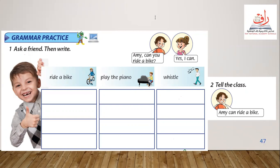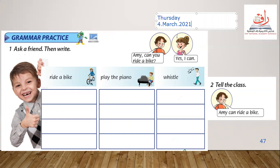Now we're going to write the date and the day on the top of our page. Today is Thursday and the date is the 4th of March 2021. Let's say the days of the week — there are seven days in the week: Sunday, Monday, Tuesday, Wednesday, Thursday, Friday, Saturday.